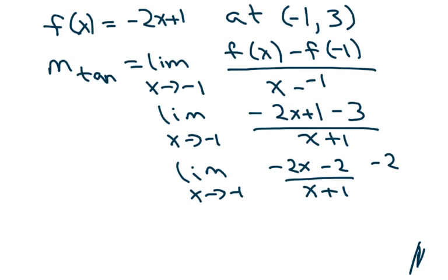So we get the limit as x approaches negative 1, and we get negative 2x minus 2 for x plus 1. I'm going to quickly factor out a negative 2 using the highest common factor or the greatest common factor. So our limit as x approaches negative 1 is 2, therefore that's our slope.